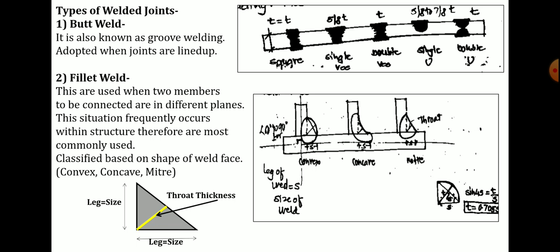In the square type joint, the entire thickness is filled with welding. In single V type, throat thickness is 5/8th of thickness. In double V type, it is equal to complete thickness. In single U type, throat thickness is 5/8th to 7/8th of the thickness of the thinner part. In double U type, throat thickness is equal to T. All these calculations are required to determine the throat thickness of the welding size in butt welds.